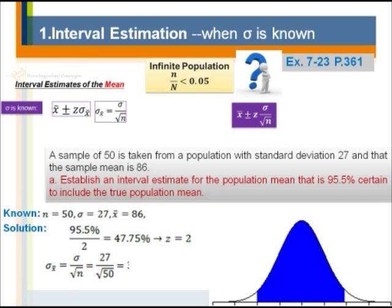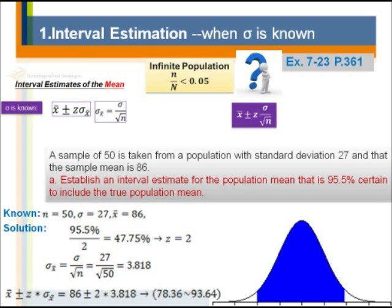The second step is to calculate the standard error: population standard deviation divided by the square root of the sample size — 27 divided by the square root of 50 — giving 3.818. Then the interval is the sample mean plus and minus the z-score times the standard error: 86 ± 2 × 3.818. This gives two numbers: 78.36 as the lower limit and 93.64 as the upper limit. That means 95.5% of our data lies between 78.36 and 93.64.